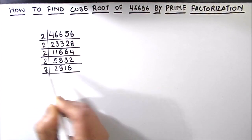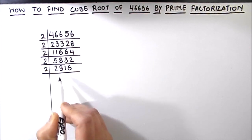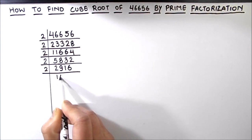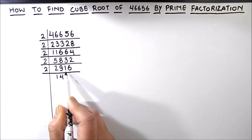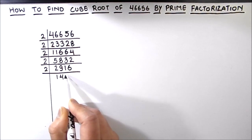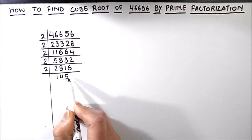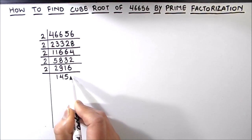This is an even number again so we can divide by 2. 2 times 1 is 2, 2 times 4 is 8, 1 is remainder, this becomes 11, 2 times 5 is 10, 1 is remainder, this becomes 16 and 2 times 8 is 16.